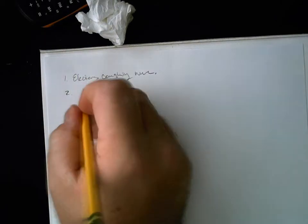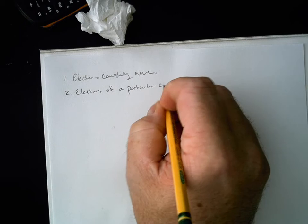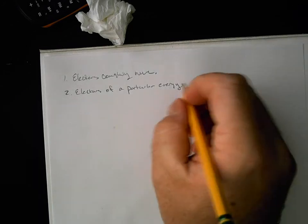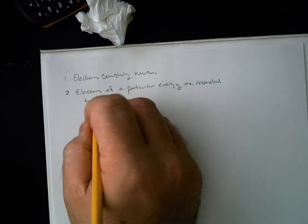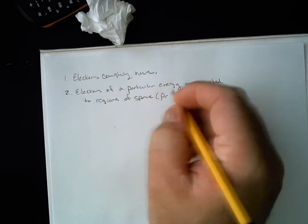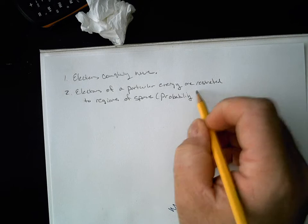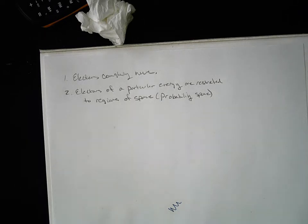Two, they're restricted. Electrons of a particular energy are restricted to regions of space. And these are called what? The regions of probability space where we find electrons of a certain energy are those are the orbitals, right?